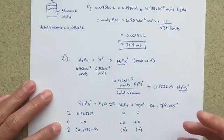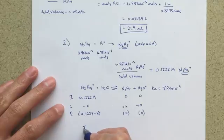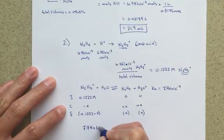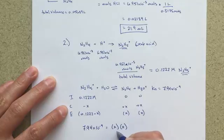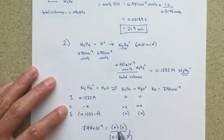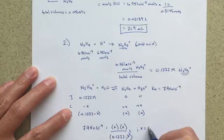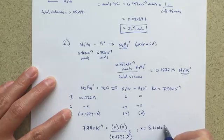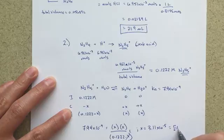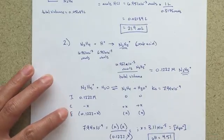7.94 times 10 to the minus ninth equals X times X over 0.1222 minus X. This minus X is going to be negligible, I know that because this Ka is so small. We can always do that double check, but rest assured that this X value should be negligible. And the X value equals 3.11 times 10 to the minus fifth. And that is equal to my concentration of H3O+ or H+. So I can solve for the pH directly from that, and that equals a pH of 4.51. So that is my pH at the equivalence point.